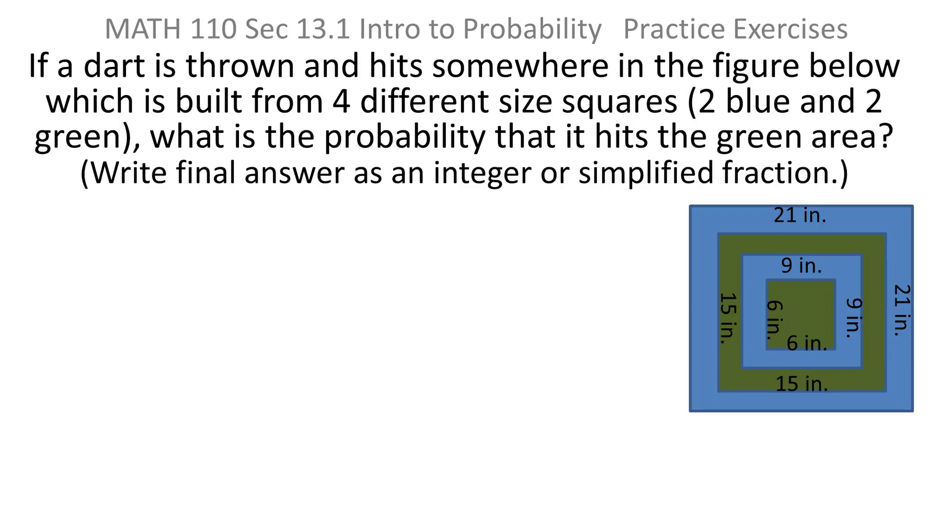Same sort of problem, but the dart board is a different shape this time. It says if a dart is thrown and hits somewhere in the figure below, and it's basically built from four different sized squares. There are two blue squares and two green squares, and they sort of sit on top of each other. What is the probability that it hits the green area? And they want this time the answer to be written as either an integer or a simplified fraction, not a decimal.